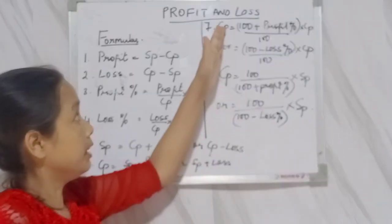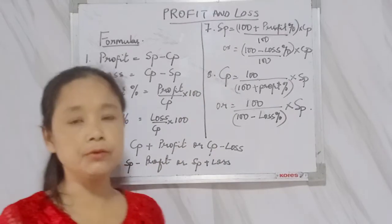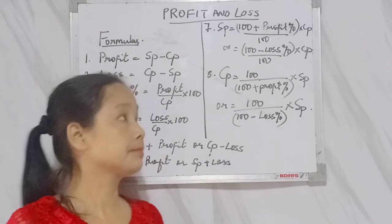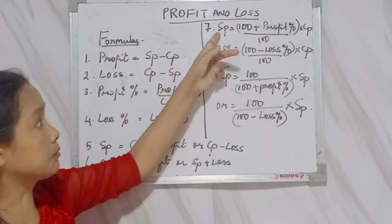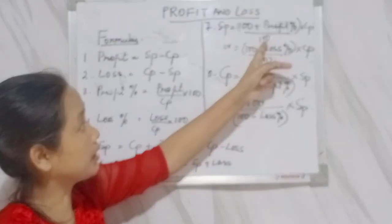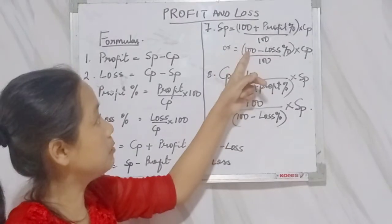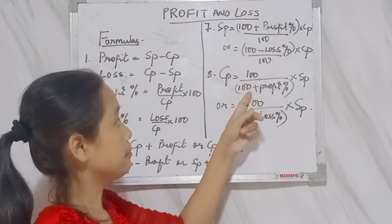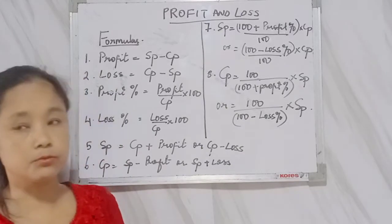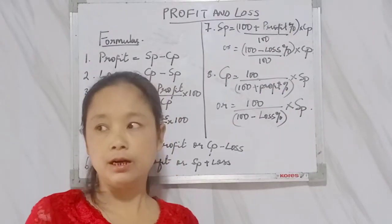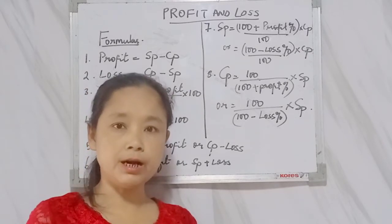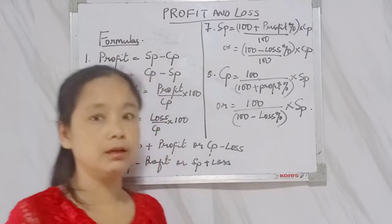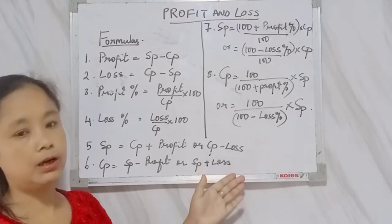When the profit percent or loss percent is given and no cost price is provided, to find the selling price use: SP = (100 + profit%) ÷ 100 × CP. When there is loss: SP = (100 − loss%) ÷ 100 × CP. To find cost price: CP = 100 ÷ (100 + profit%) × SP, or CP = 100 ÷ (100 − loss%) × SP. All these formulas are very important — memorize them and know them clearly, otherwise you will not be able to solve any problems on profit or loss.